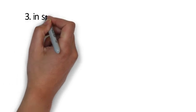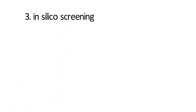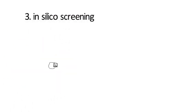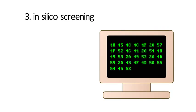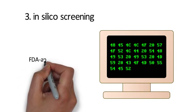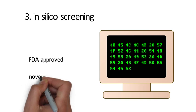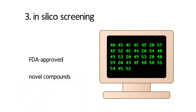We then perform a high-throughput in-silico screening. In-silico means performed on a computer or via computer simulation. We screen both FDA-approved and novel compounds against the mutated genes previously identified.